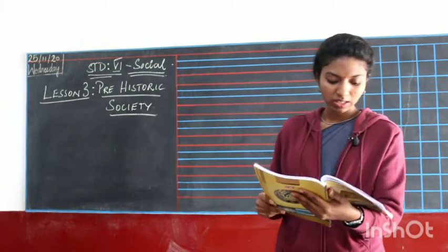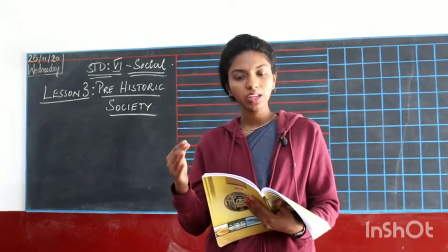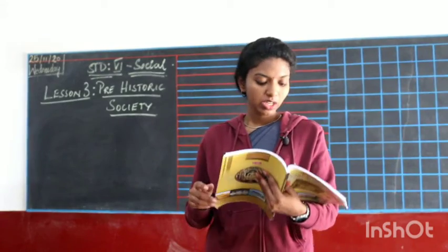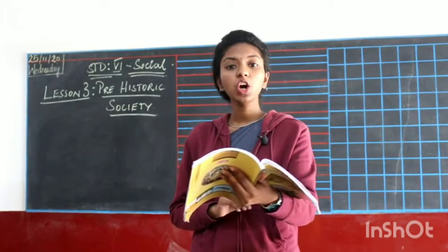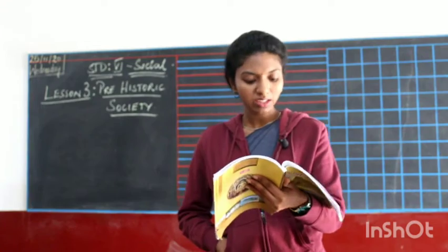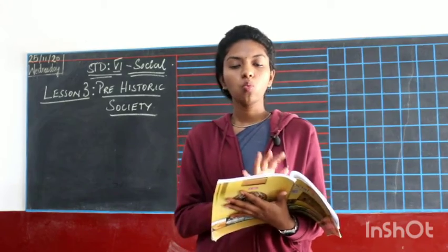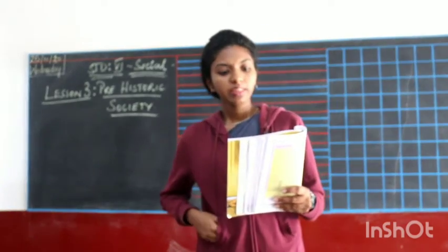Now, the three different stages in the prehistoric period. The main objective of this lesson is to know the difference between historic and prehistoric, and the different ages of the prehistoric period. The three stages are: Paleolithic, Mesolithic, and Neolithic.